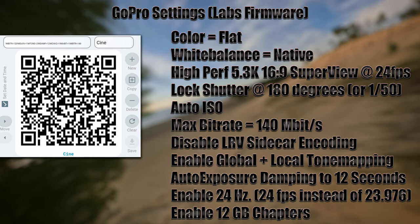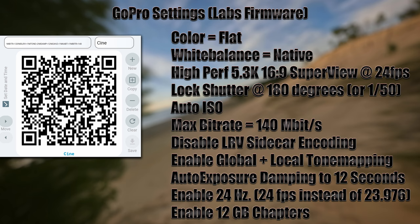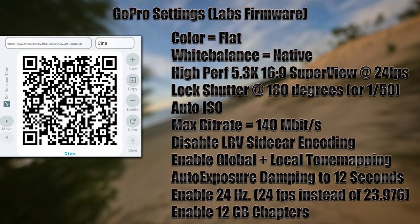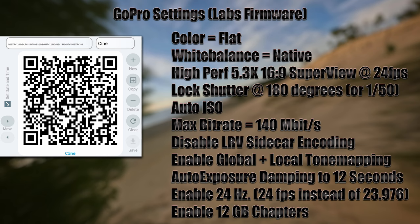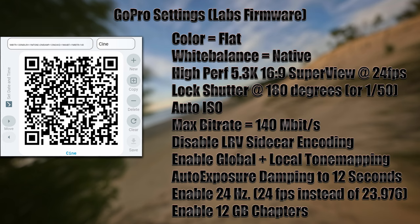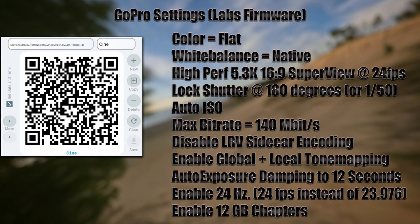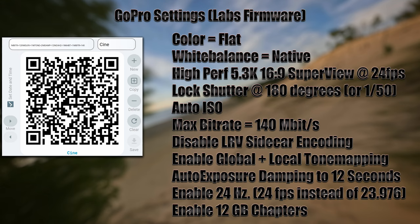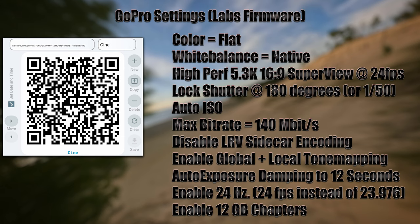We want to disable the LRV encoding. When you connect your phone to the GoPro and stream a video over Wi-Fi, it's streaming a lower-resolution copy encoded alongside the regular MP4. The MP4 normally has two video tracks plus a gyro track. By removing that lower-bitrate video track, we save bandwidth and allow a higher bitrate for the main video — the trade-off is you won't be able to watch over Wi-Fi, and GoPro Plus will need to generate the low-bitrate version itself.